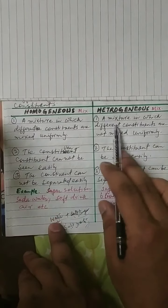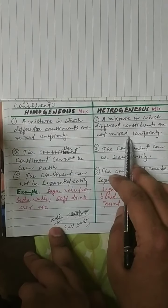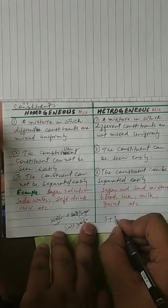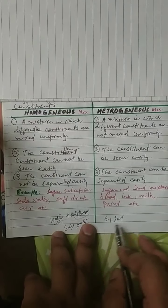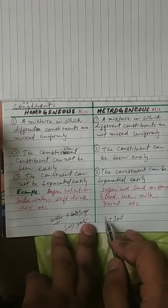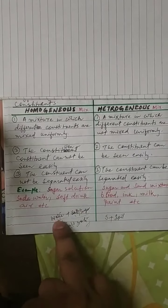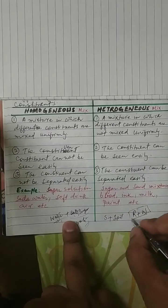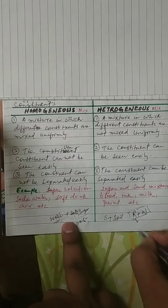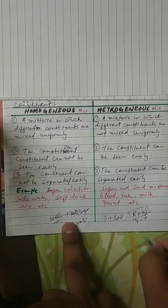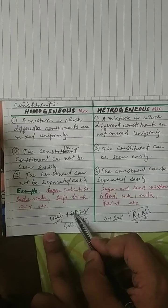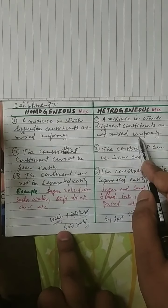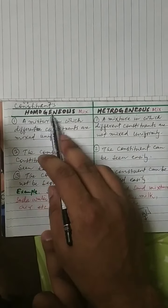A heterogeneous mixture is a mixture in which different constituents are not mixed uniformly. For example, sand and soil — if you mix them, they will not completely mix. Similarly, a mixture of rice and wheat: if you take 2 kg of rice and 1 kg of wheat and mix them together, they will not completely mix. Salt and water mix uniformly, but rice and wheat do not. So these are examples of heterogeneous and homogeneous mixtures respectively.